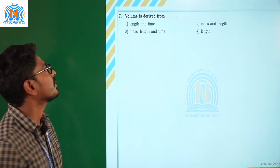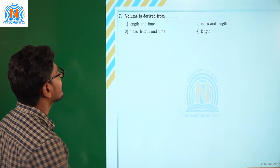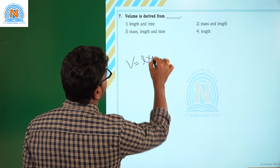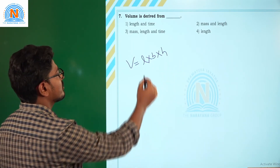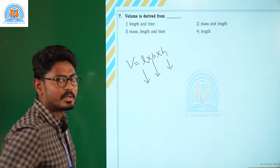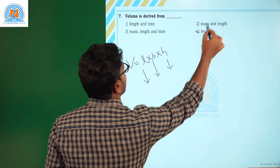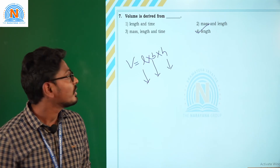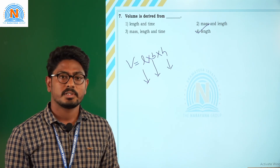Next: volume is derived from — ? Volume is defined as length into breadth into height. These three dimensions are all nothing but length, so volume is simply depending upon length. The correct answer is option number 4. Hope you all understood the assignment discussed above. Thank you.